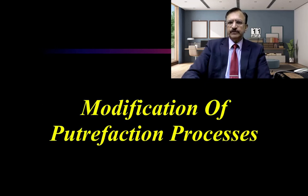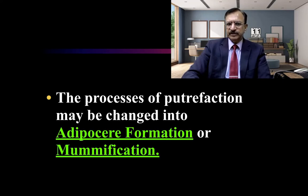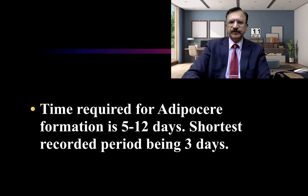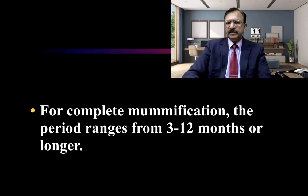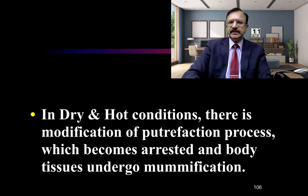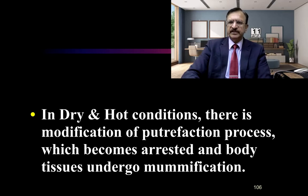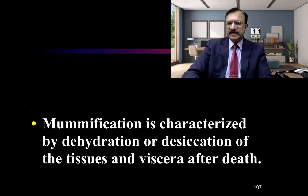The modification of the putrefactive process means the body may change into adipocere formation or mummification, depending upon the environment in which it is present. The time required for adipocere formation is 5 to 12 days, and the shortest recorded time is 3 days. For complete mummification the period ranges from 3 to 12 months or longer. Mummification is basically desiccation and drying — in dry, hot conditions the putrefactive process becomes arrested and the body undergoes mummification, characterized by dehydration and desiccation of the tissues and viscera after death.